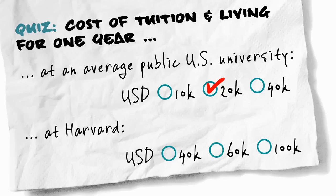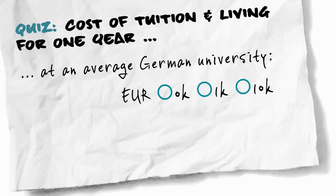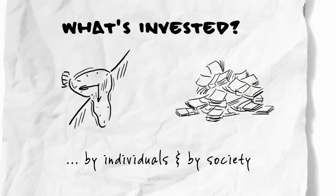What about Harvard? Officially they say $60,000 — that's tuition and living. Now what about Germany? We have a cheap education system. What does it cost to study in Germany for one year? Around $10,000 for tuition and living. So everybody is investing a lot of time and money into going to university — between €10,000 and $60,000 depending on where you want to be educated.